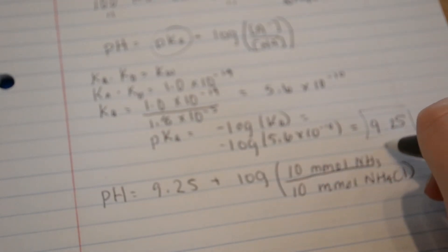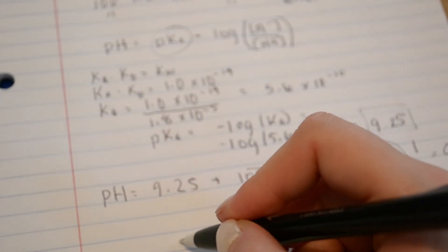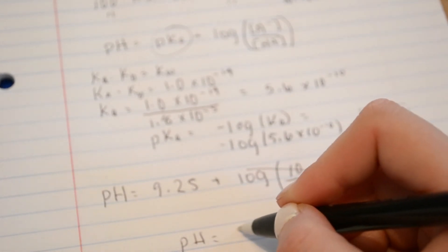This is equal to 1, log of 1 equals 0. So this whole thing cancels out. So the original pH is 9.25.